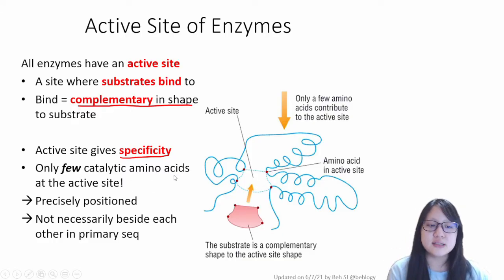Now these catalytic amino acids are the ones which have the R groups with the right property in order to interact with the substrate here. And therefore, when the substrate is near, these few amino acids and its R groups will react or temporarily form bonds with the substrate and catalyze the reaction.